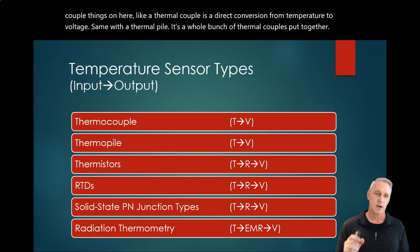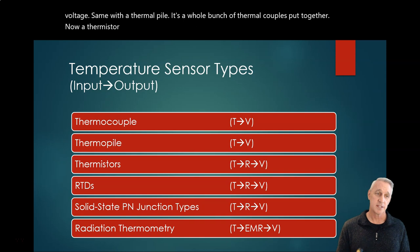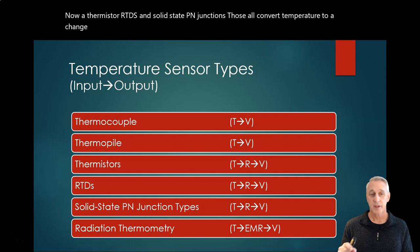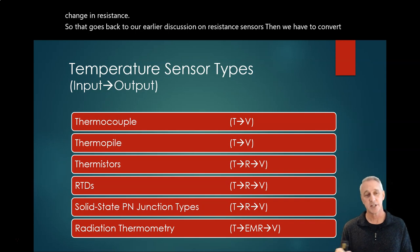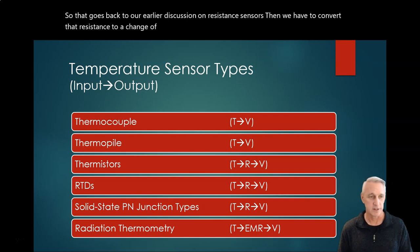Now a thermistor, RTDs, and solid state PN junctions all convert temperature to a change in resistance. That goes back to our earlier discussion on resistance sensors. Then we have to convert that resistance to a change of voltage using one of the previous circuits we've talked about.